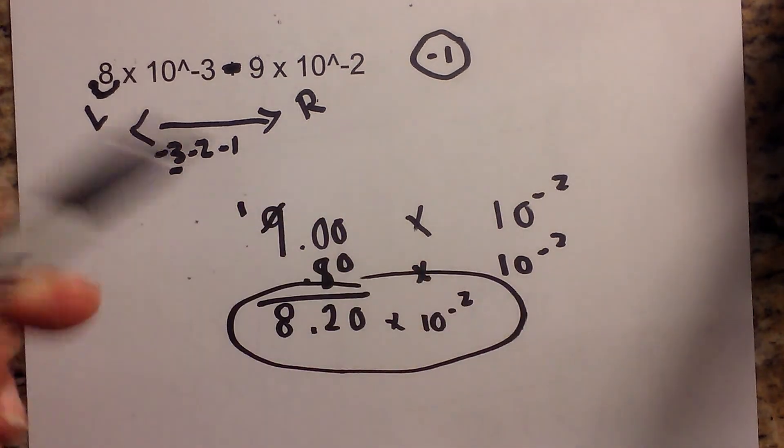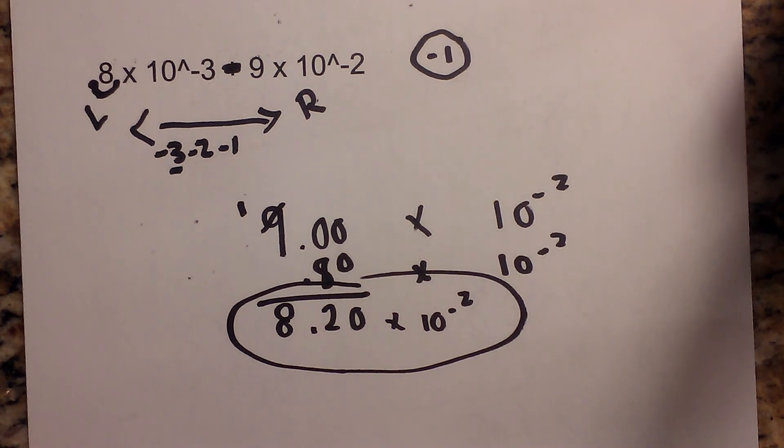So there is our second answer, 8.20 times 10 to the negative 2nd. I hope that helps with subtracting in scientific notation.